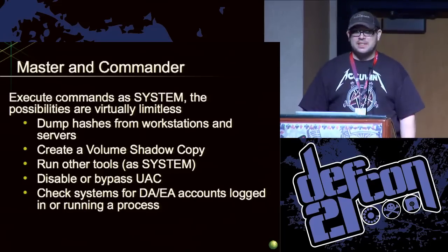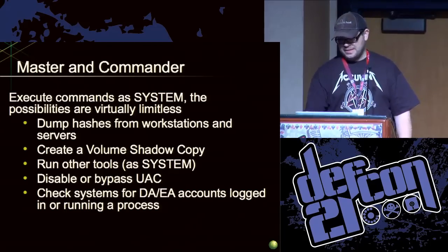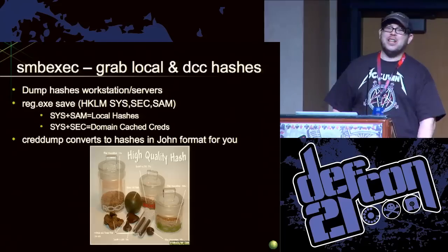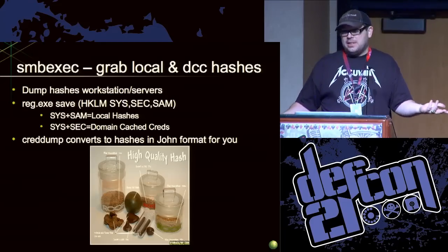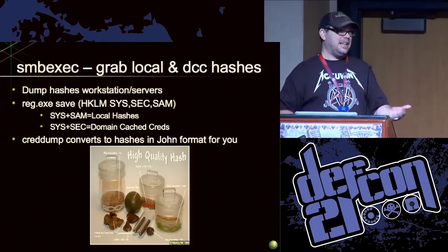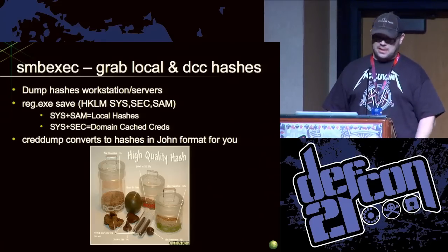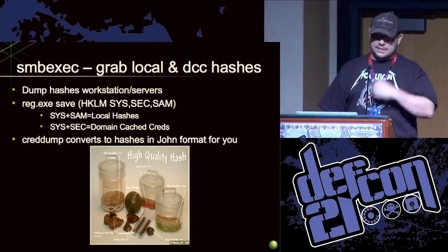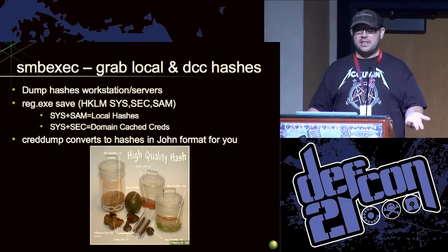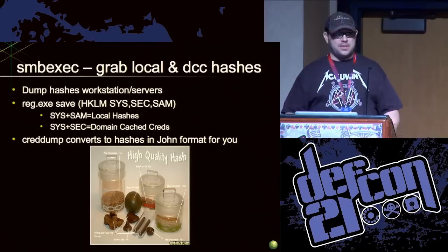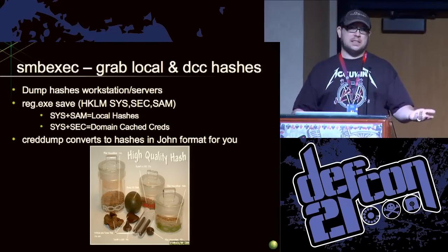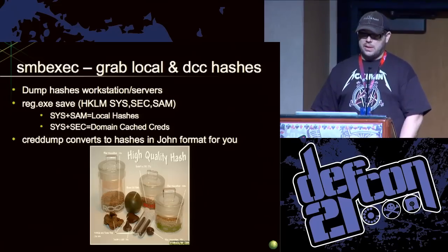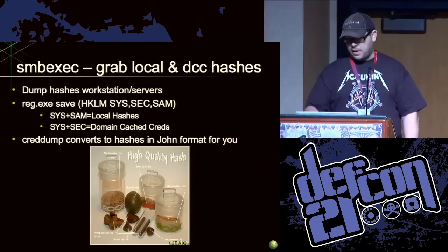So basically we can execute stuff as SYSTEM. We're like, holy shit, let's get some hashes. Old school way was to get the registry keys out and do it — so let's automate that. SMB exec dumps the hashes from workstations and servers by running the Windows command reg.exe save. It saves the registry key — SYS plus SAM is your local hashes, everybody probably knows that; SYS plus SEC is your domain cache credentials. Then we run it through creddump which converts the hashes into John format. And of course we've got an NTLM hash there as well.